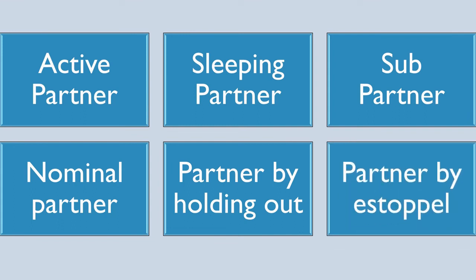We are aware of the concept of Estoppel. Estoppel says that you are causing another person to believe in the existence of something. In case of partnership, suppose A is not a partner in a firm, but he allows B to believe that he is a partner — either by directly telling B, or by allowing C to tell B that he is a partner. Knowingly, he is causing another person to believe that he is a partner, when actually he is not. So when a liability arises, he cannot deny it. Initially he showed himself as a partner, so when it comes to liability he cannot waive it off. If he has allowed people to believe that he is a partner, he must incur the liability as well.